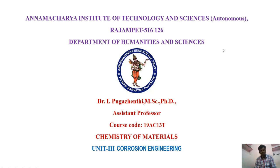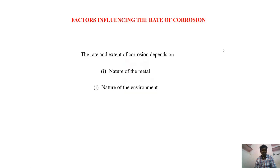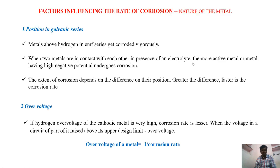Good morning to everyone. In this session, we have to discuss about some of the factors which are increasing the rate of corrosion. Based on the nature of the metal and the nature of the environment, we are dividing these factors into two groups. First, we have to discuss some of the factors which are coming under the nature of the metal.